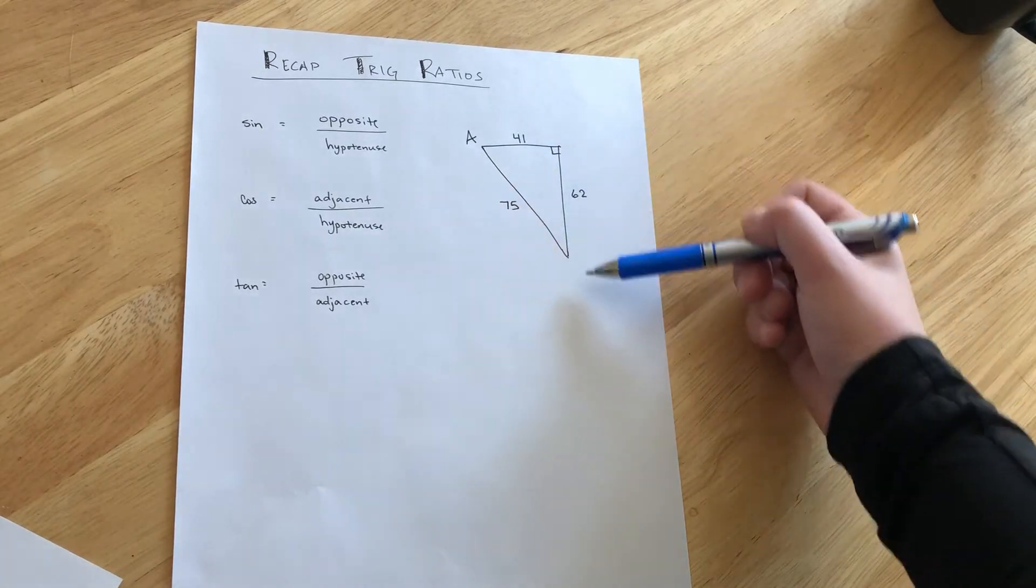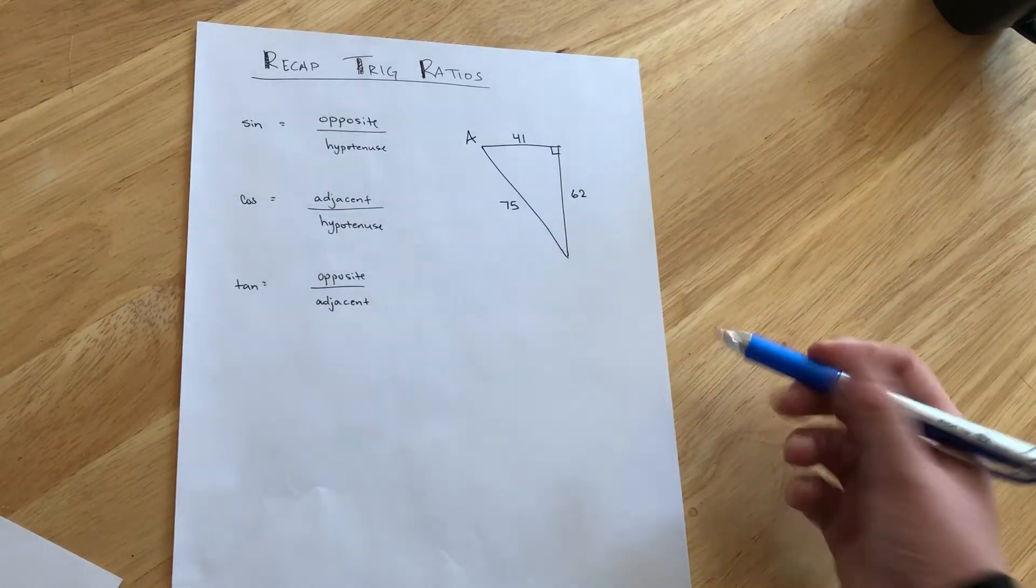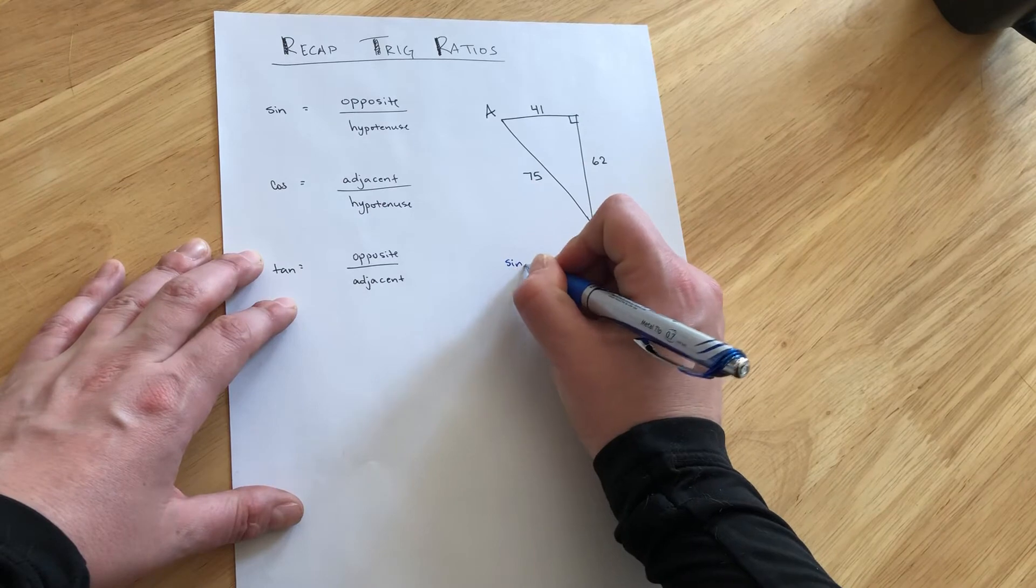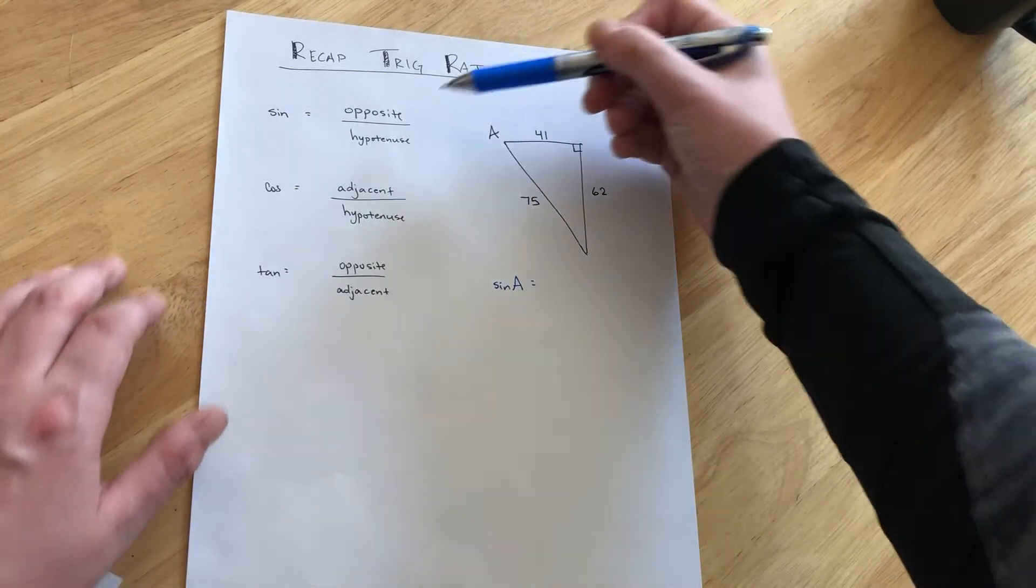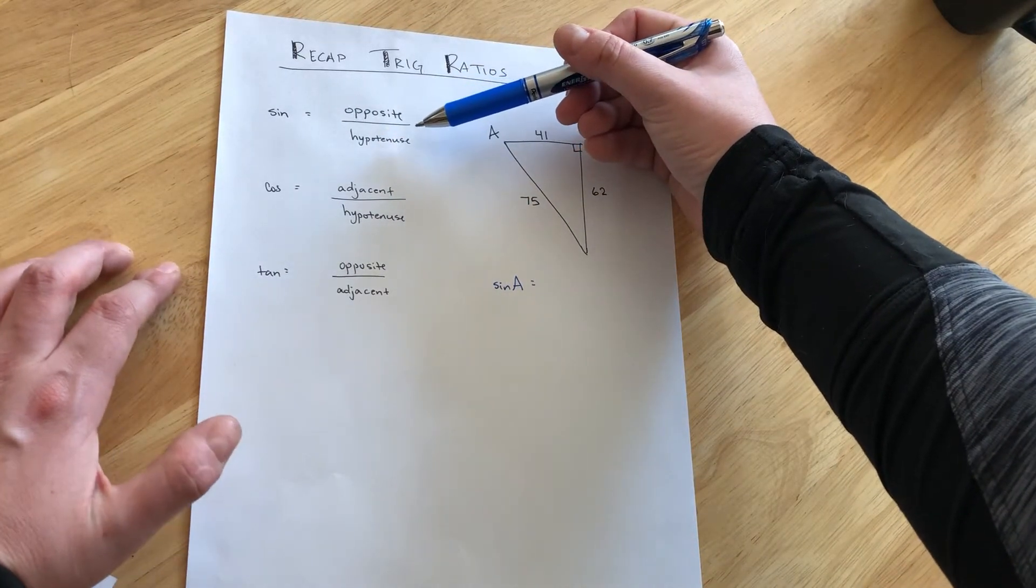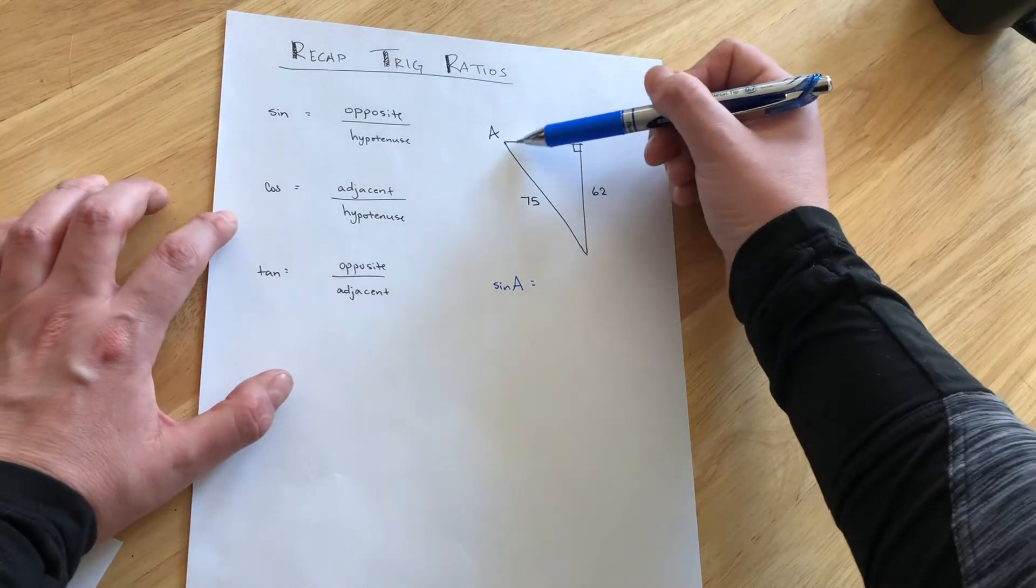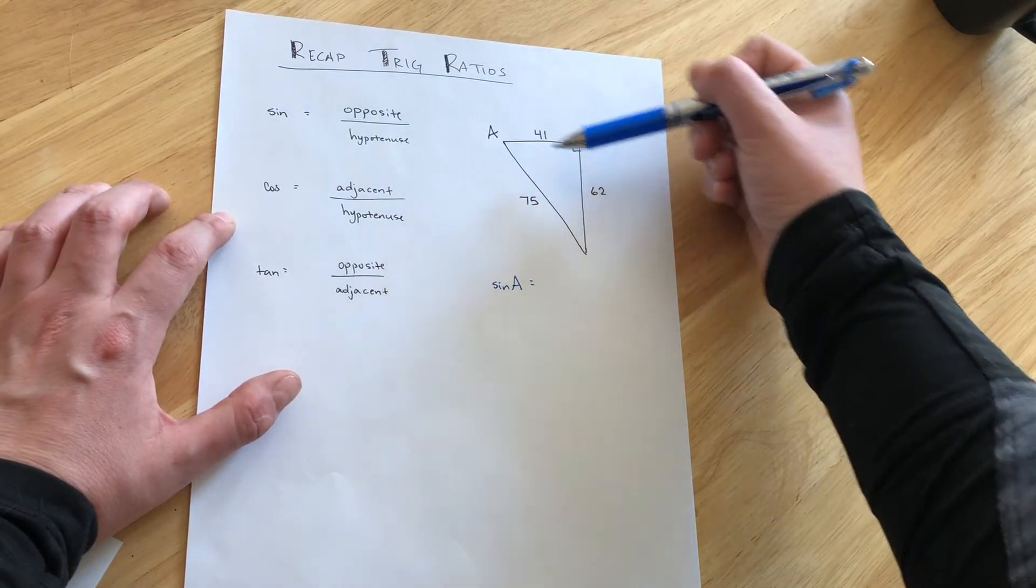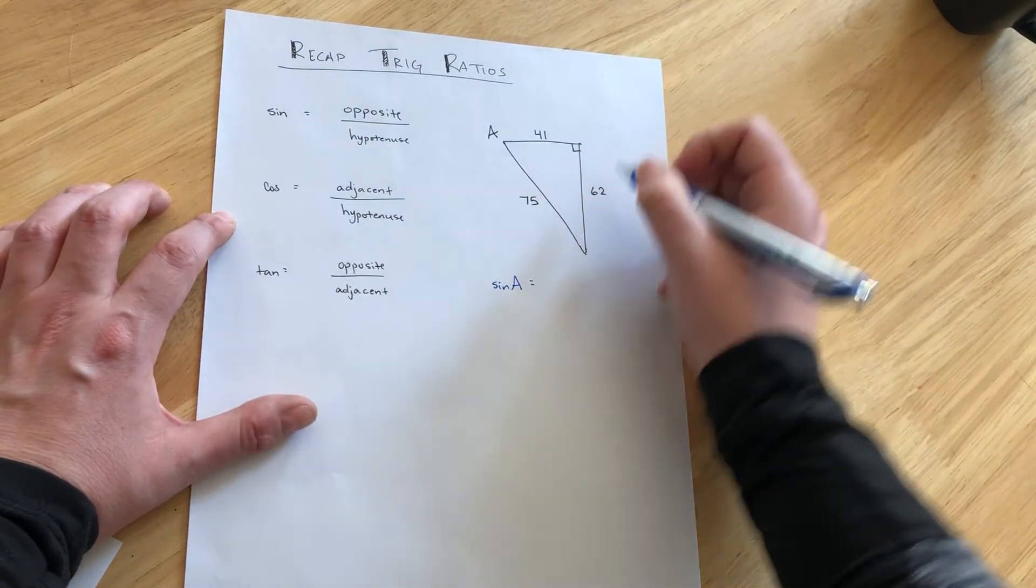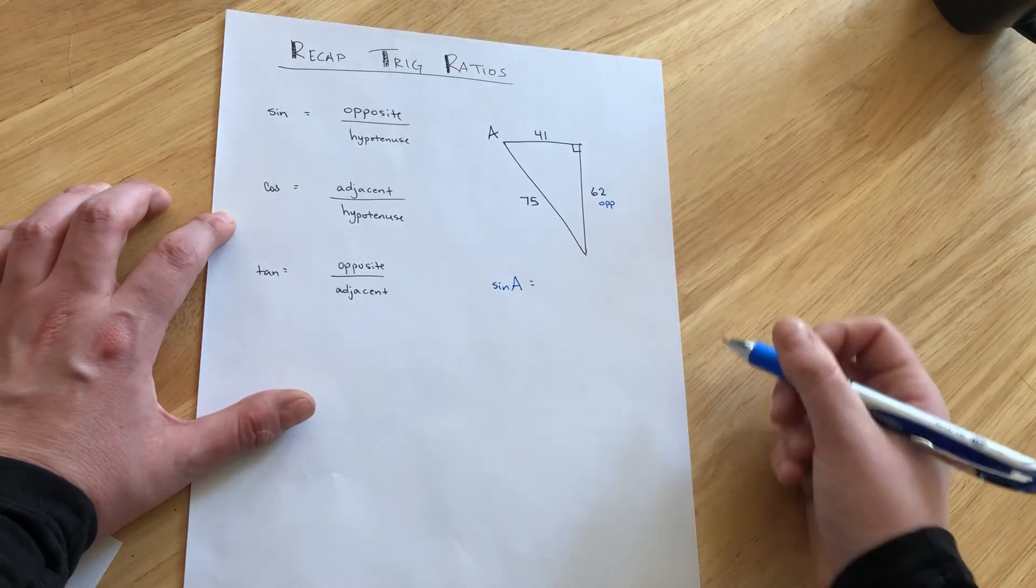We have some side lengths of 41, 62, and 75. So if we were writing out the sine ratio of angle A, we would want to make sure we put the opposite side over the hypotenuse. So from angle A's perspective, the opposite side is across from it. It's the side that doesn't touch it.